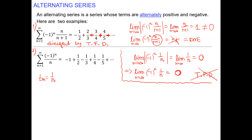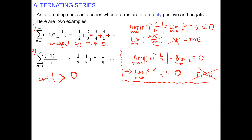We need a new tool. Before showing the new tool, let's look at a few things. The main magnitude terms — not including the alternation — must be positive. That's the main reason: b sub n, which is one over n, must be positive. If b sub n had different signs, the alternation would be messed up, because we always need positive terms.